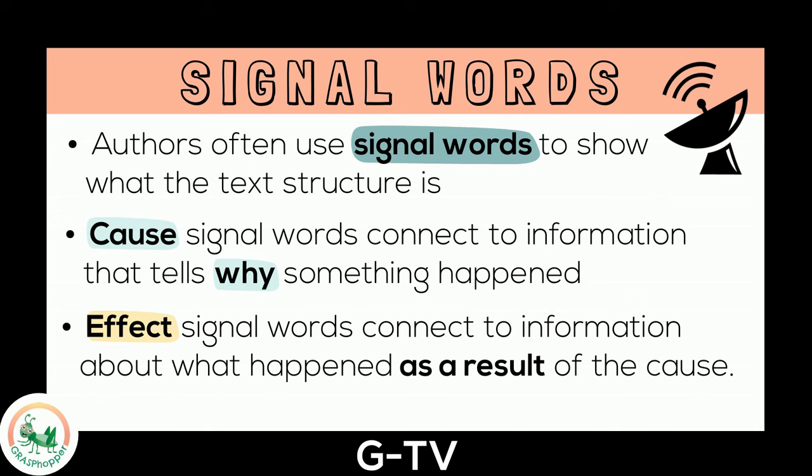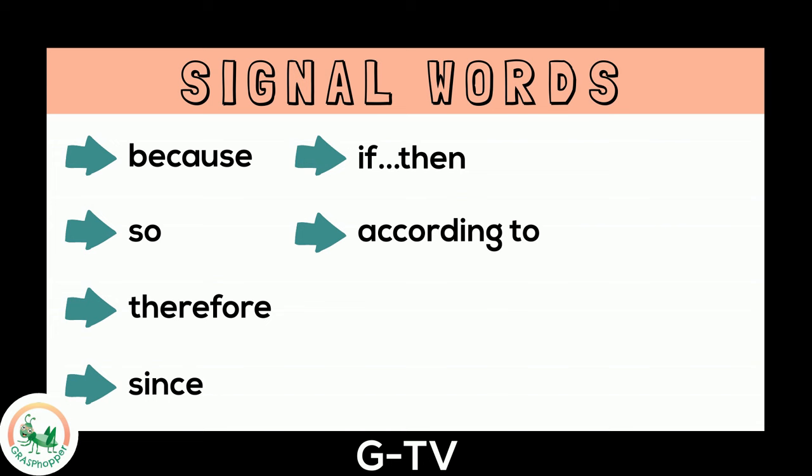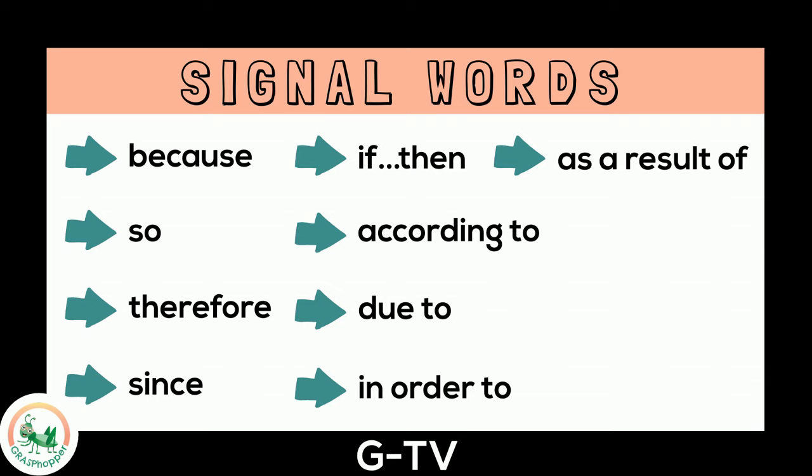Here are some signal words you may see for cause and effect: because, so, therefore, since, if, then, according to, due to, in order to, and as a result of.